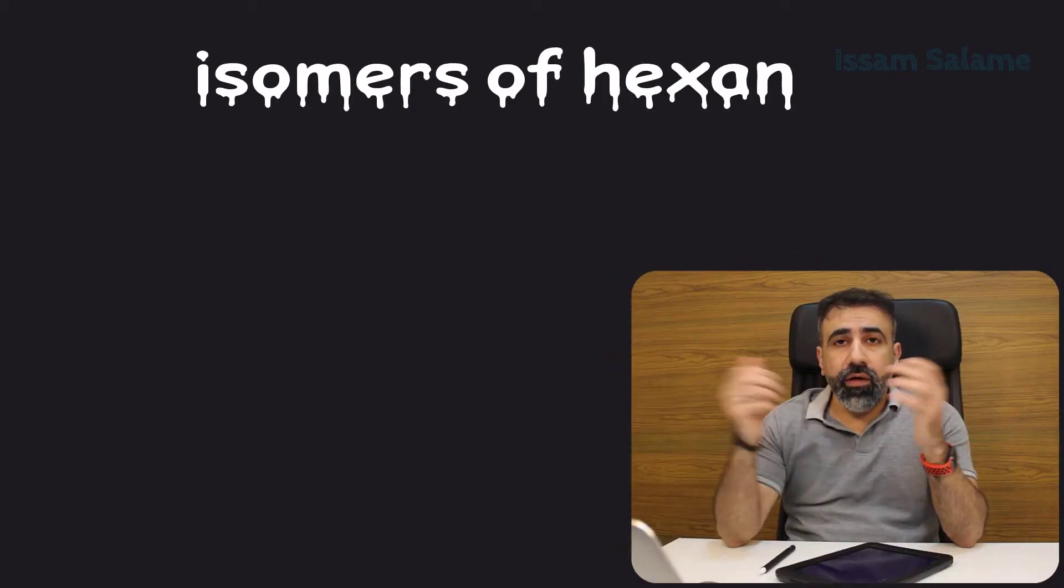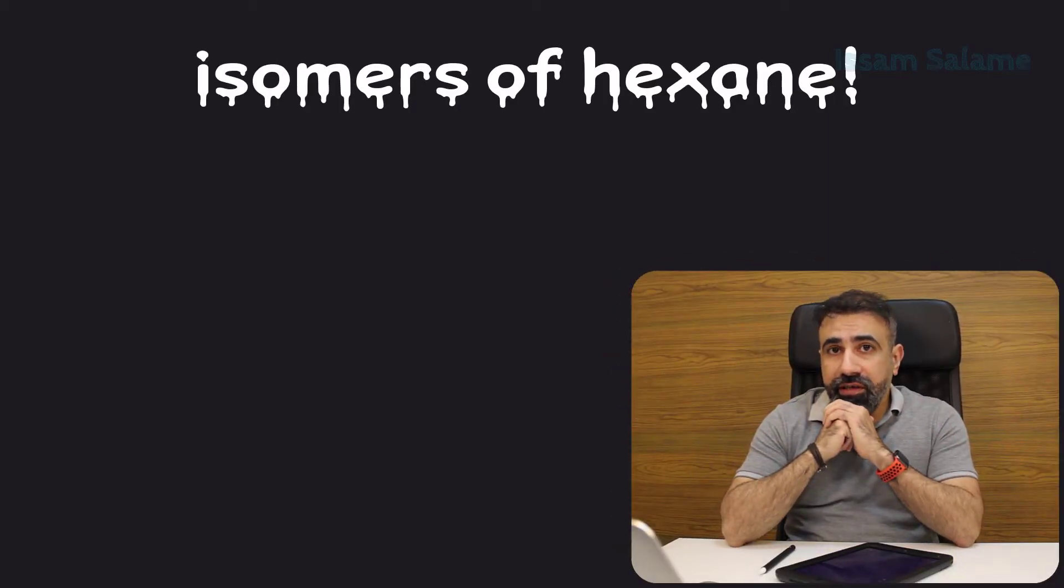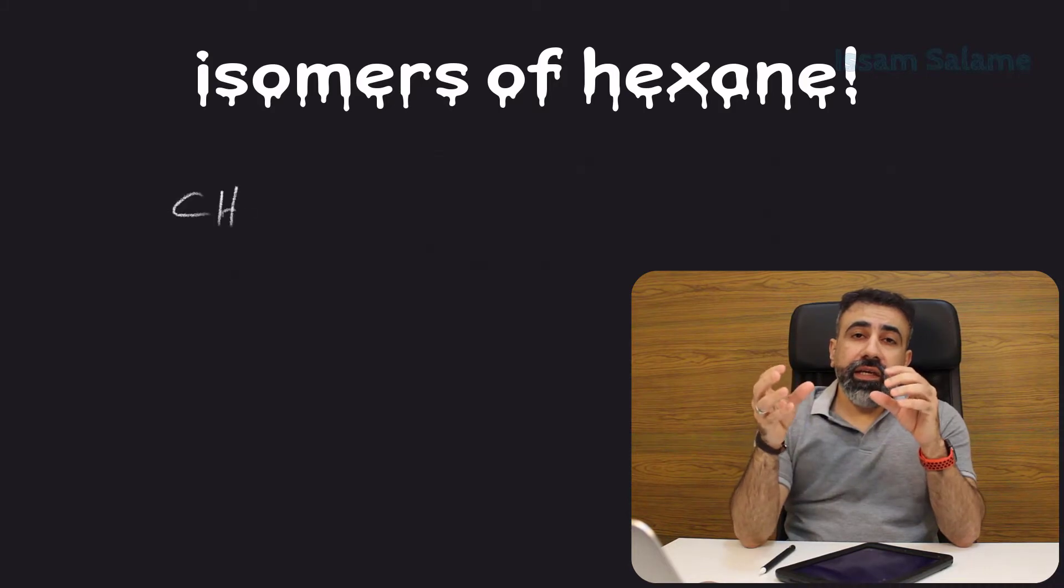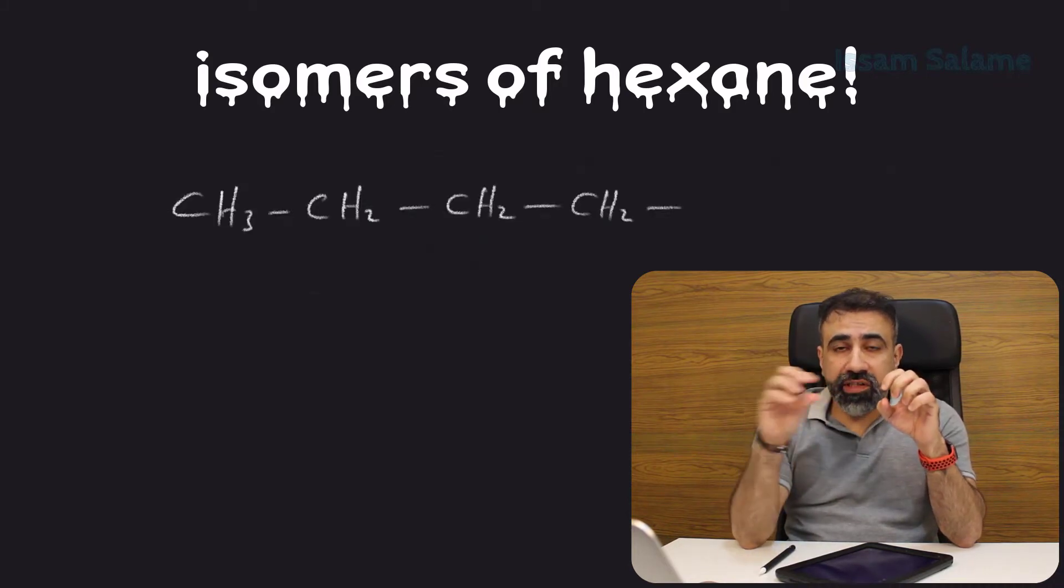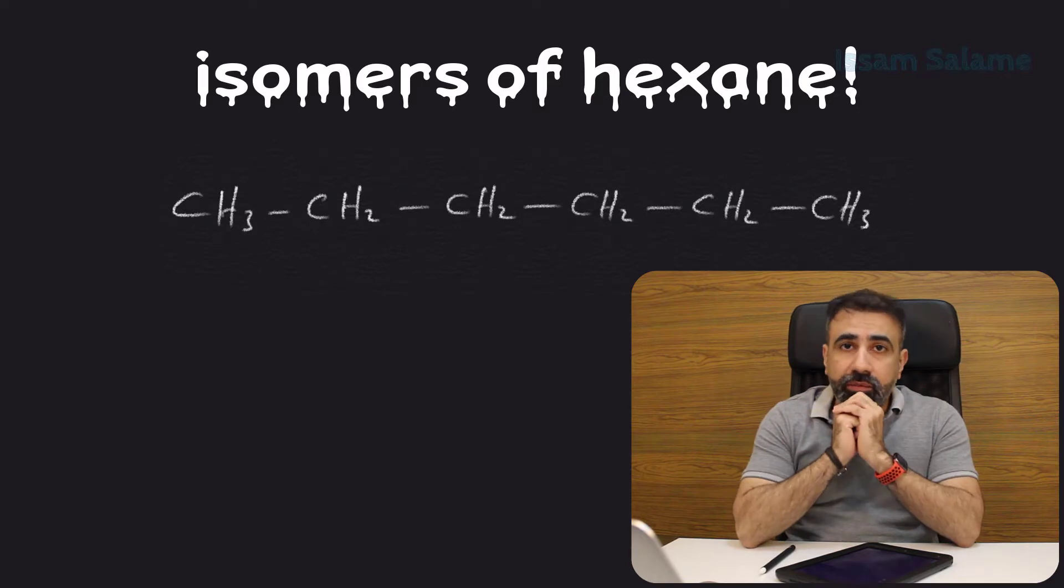Isomers of Hexane. There is nothing called isomers of hexane. Hexane is a straight chain of six carbon atoms joined by single covalent bonds.